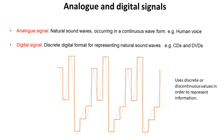A digital signal on the other hand is a discrete digital format for representing natural sound waves. Think of this as an MP3 you're playing back or a sound from a CD. It uses discrete or discontinuous values in order to represent information.